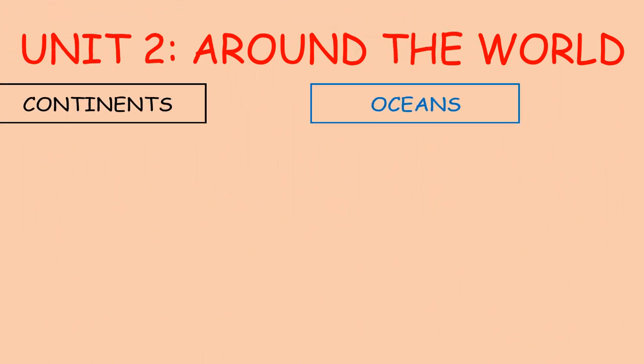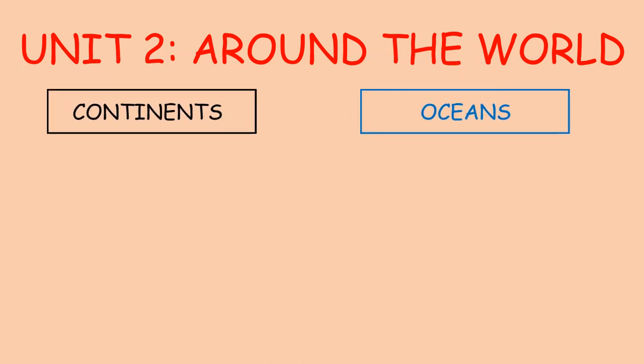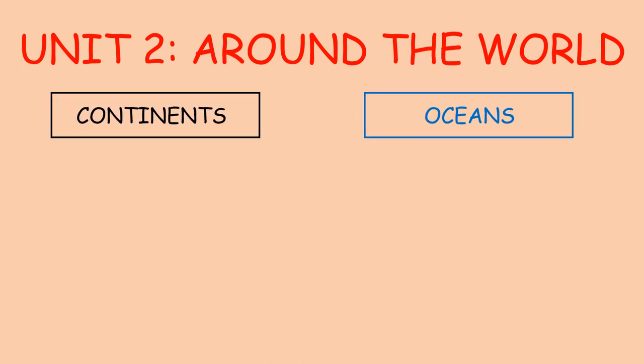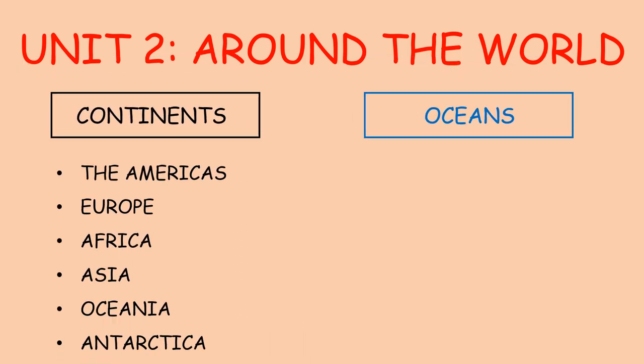In unit number two, we learned about around the world. Around the world, you can find continents and oceans. The continents are: The Americas, Europe, Africa, Asia, Oceania, and Antarctica.